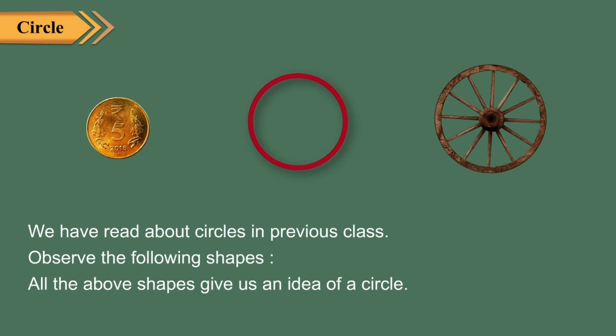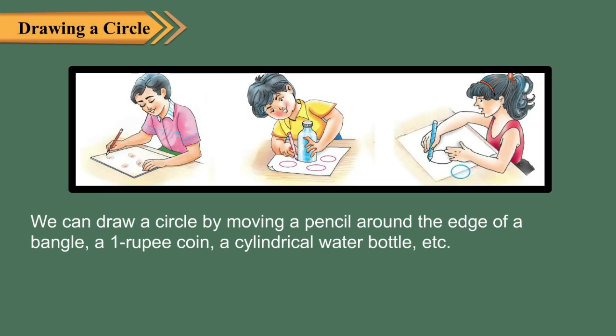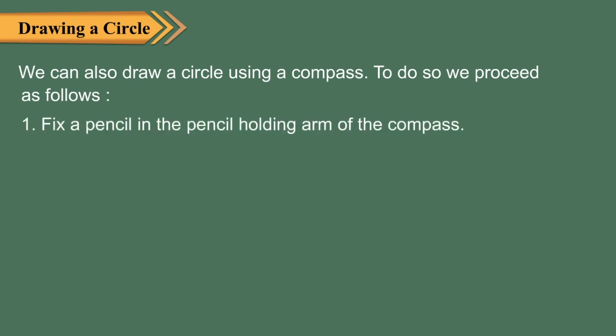Circle: we have read about circles in a previous class. Observe the following shapes — all the above shapes give us an idea of a circle. We can draw a circle by moving a pencil around the edge of a bangle, a one-rupee coin, or a cylindrical water bottle. We can also draw a circle using a compass.